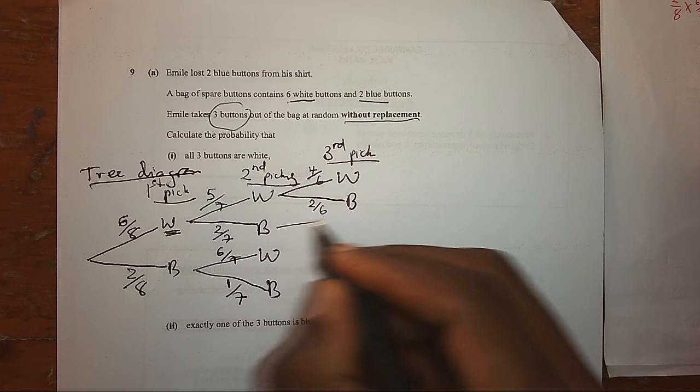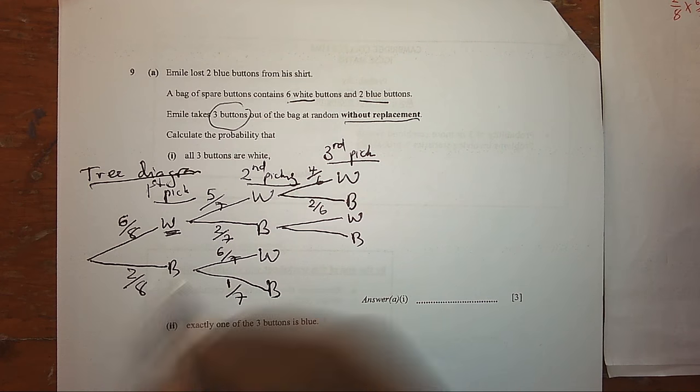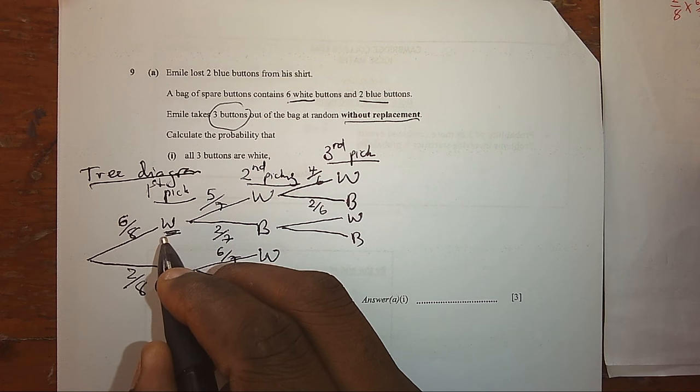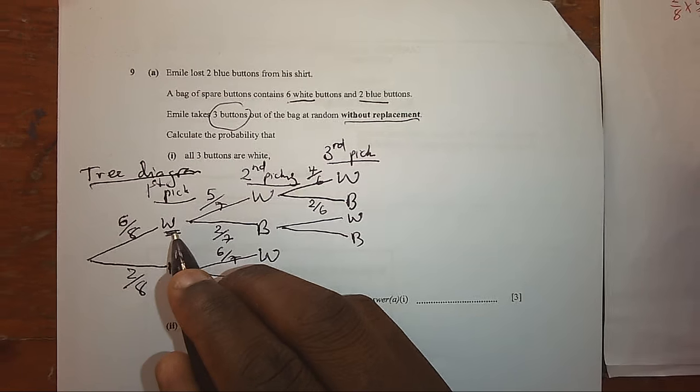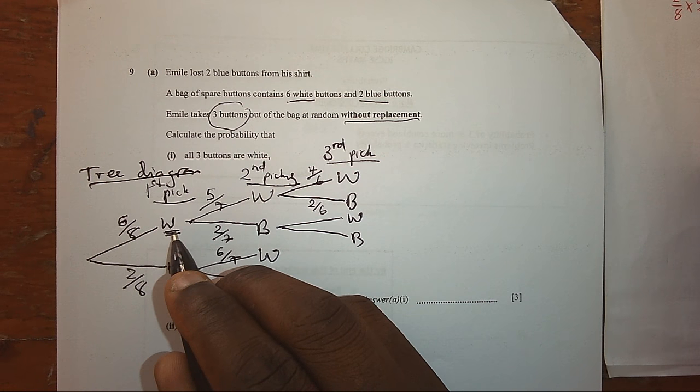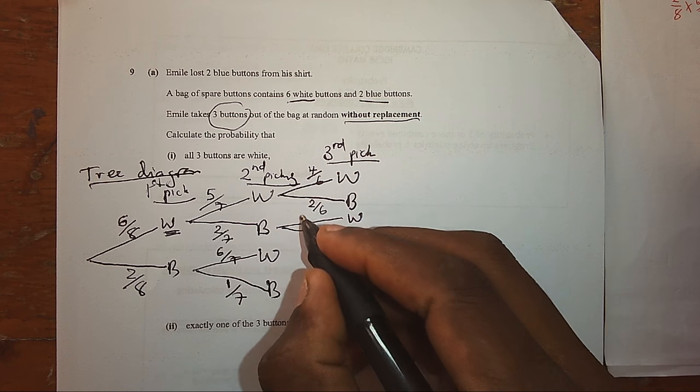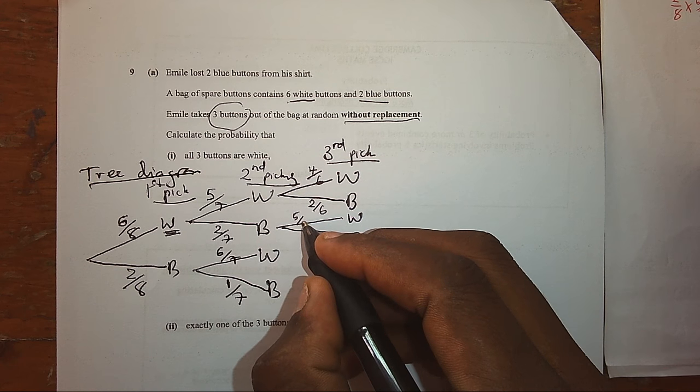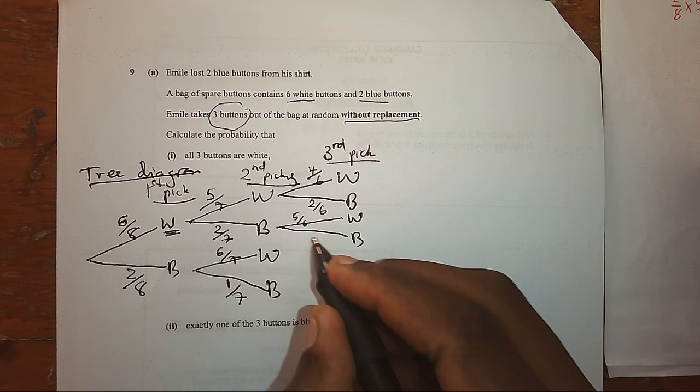Having picked previously white then blue, you can pick white or blue again. But the first time you picked white, the second time you picked blue. Meaning, a white button has reduced by one and a blue button has reduced by one. So, now, we shall have only five out of six, and the blue are two, now will be one out of six.